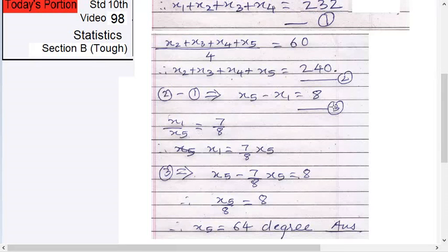Now X1 divided by X5 is given as 7/8. Okay, so X1 equals 7X5 divided by 8, right? So substitute this in equation 3.